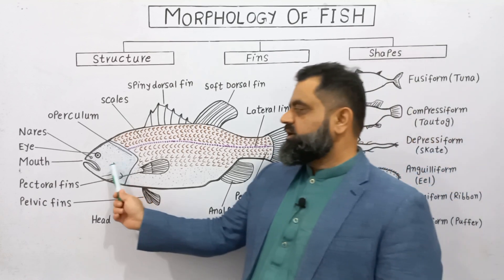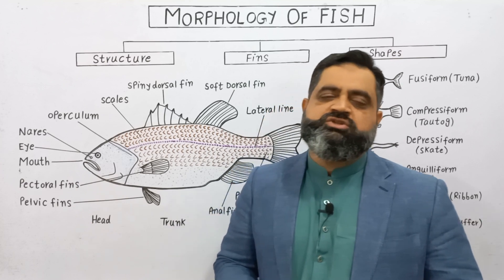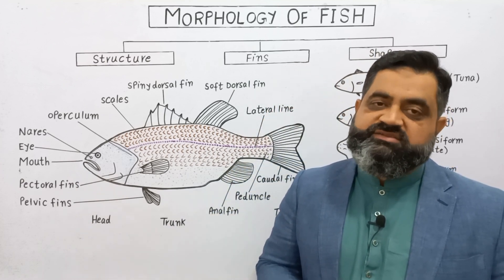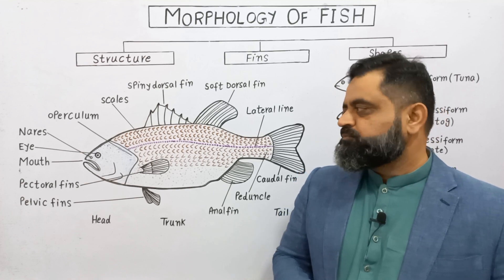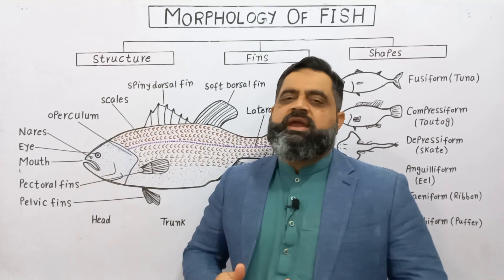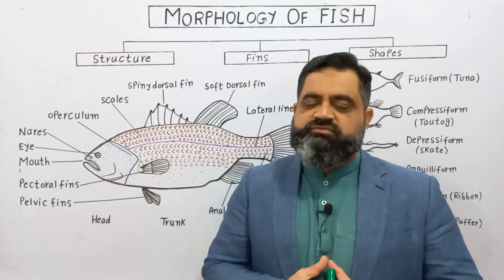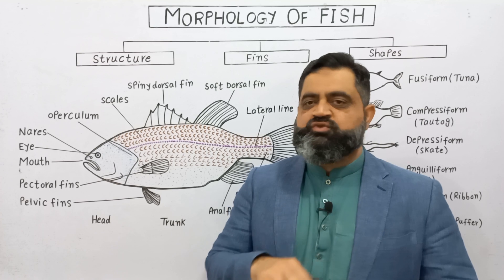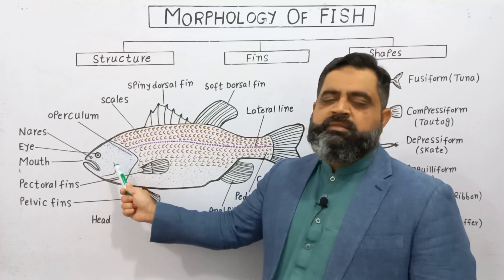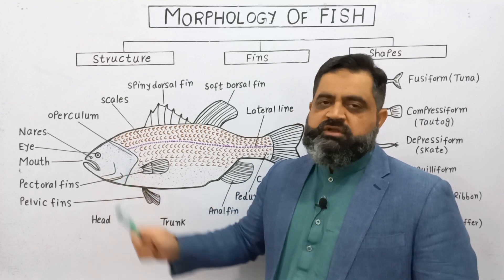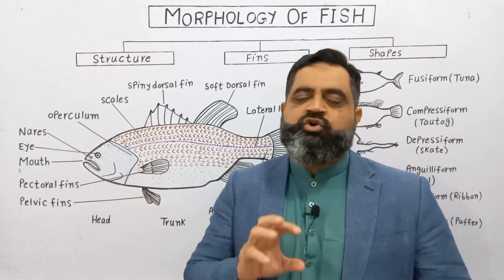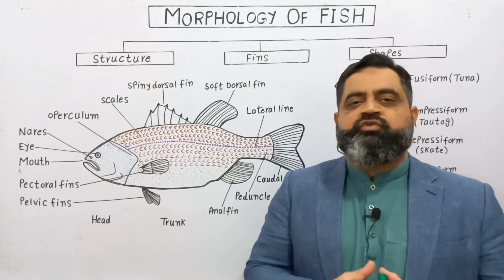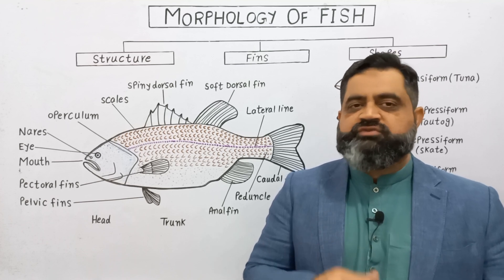If we look at the head, there is an opening which is known as the mouth. The mouth is usually terminal but sometimes it is also located on the ventral side. The mouth is used for feeding purposes and also has the function of taking in water which passes over the gills just behind the mouth for the purpose of breathing or respiration. Fish use gills for breathing, absorbing oxygen from the water.